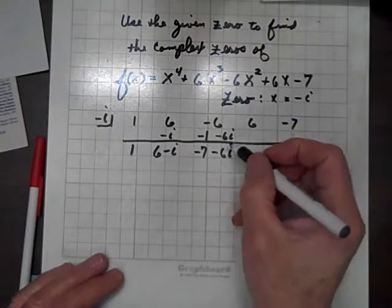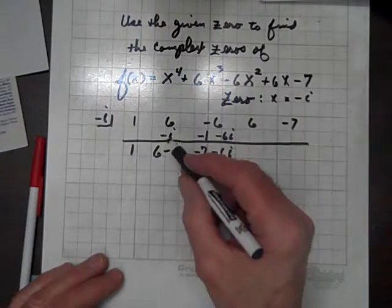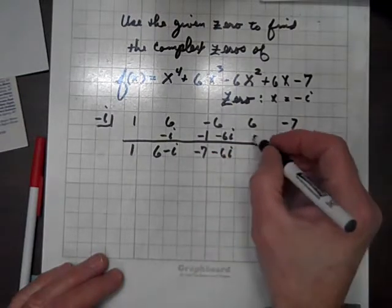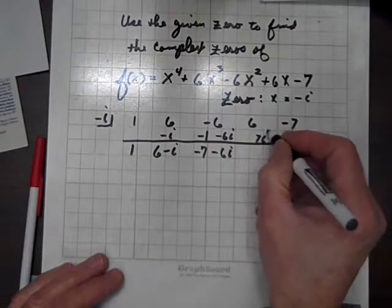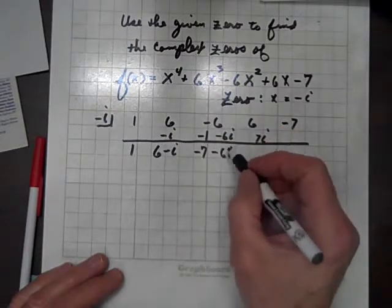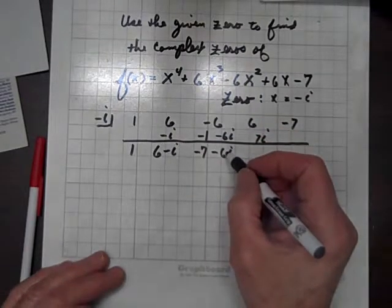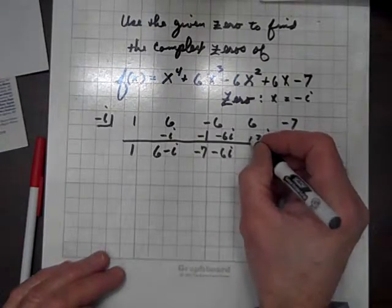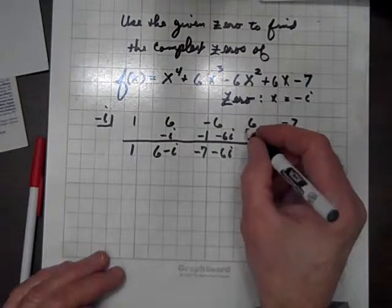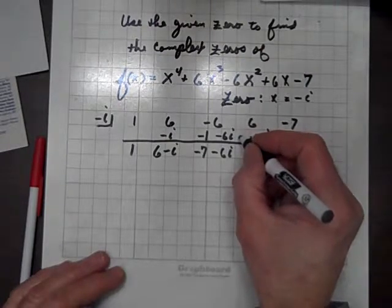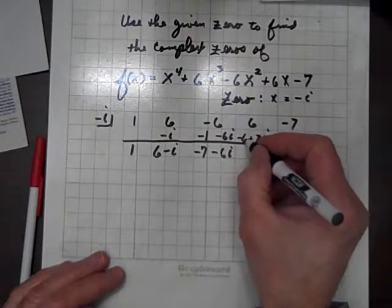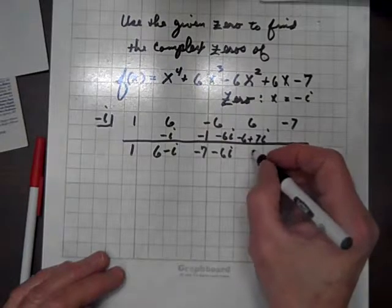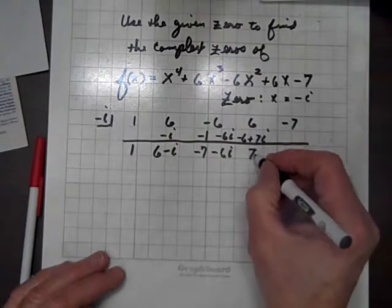Multiplying by negative i, we get negative i times negative 7 is 7i. Negative i times negative 6i is 6i squared, but i squared is negative 1, and negative 1 times 6 is negative 6. Adding, the 6s add out, and we have 7i.